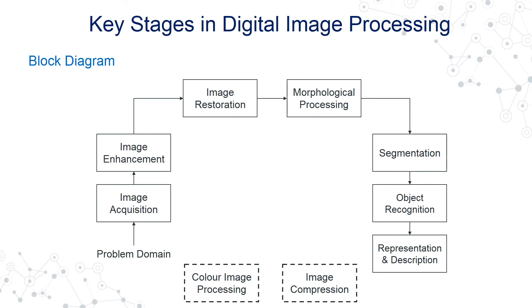The key stages in digital image processing start with problem identification and the acquiring of the image via a camera sensor or the human eye.